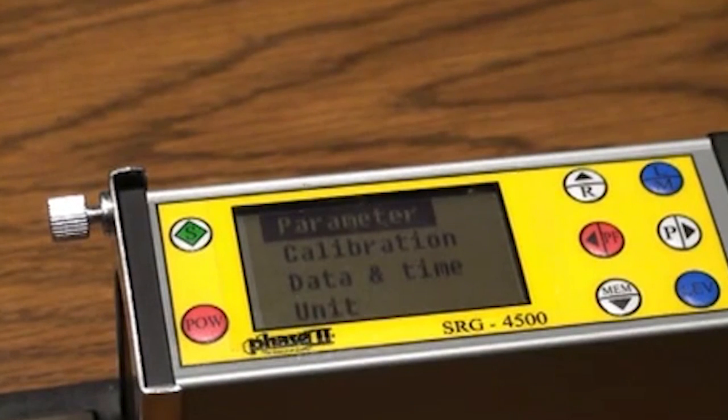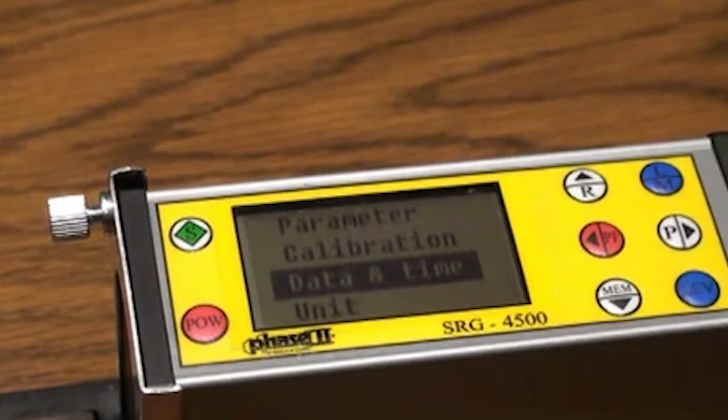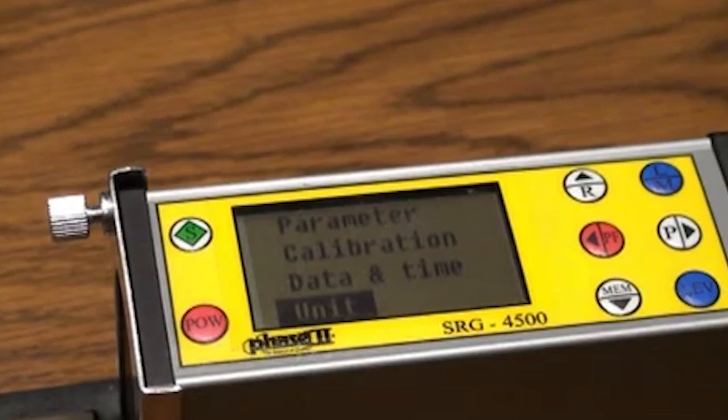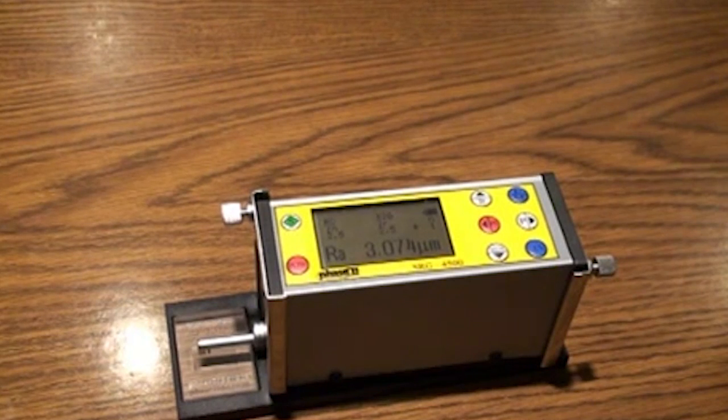From here you can enter calibration, date and time, measuring unit, inch or metric, and the language setting. Once you have all parameter settings complete, let's demonstrate how to perform taking a test.